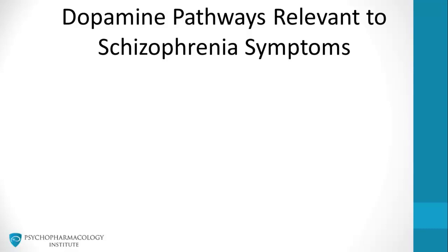As we discussed in the dopamine pathways video, there are four pathways key to anti-psychotic pharmacology. Blockade of two of these pathways can lead to adverse effects, while the other two pathways are relevant to schizophrenia symptoms.